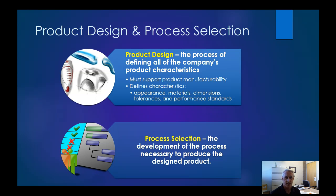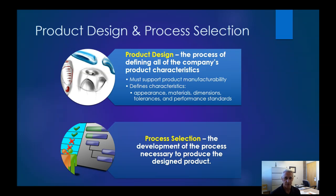On product design and process selection — what does that really mean to us? Product design is really the process of defining all of your company's characteristics: what kind of products you can develop, what you can do to manufacture them, what the appearance needs to look like, material requirements, dimensional requirements, tolerances, and performance needs. For example, wheels on a car perform completely differently than wheels on a bus or a bike. The type of process — whether technology-based or not — matters less than the scale and types of processes available to make those products.